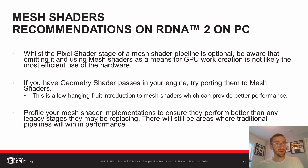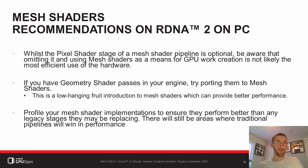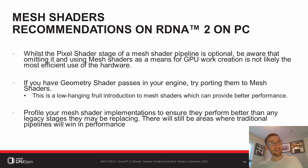Whilst the pixel shader stage of a Mesh Shader pipeline is optional, be aware that using amplification and Mesh Shaders as a means for GPU work creation by writing UAVs may not be the most efficient means of achieving this. Ordering guarantees can end up holding back waves and you may have better performance using other compute shaders. If you have a geometry shader pass in your engine, try porting them to Mesh Shaders. This is a low-hanging fruit introduction to Mesh Shaders which can provide better performance than geometry shader pipelines. Profile your Mesh Shader implementations to ensure they perform better than any legacy stages they are replacing. There will still be areas where traditional pipelines will win out in performance.